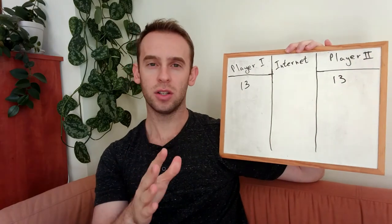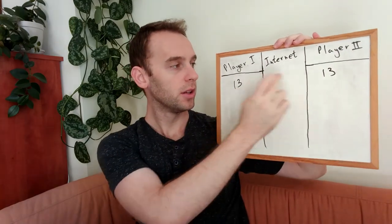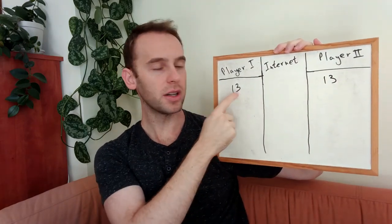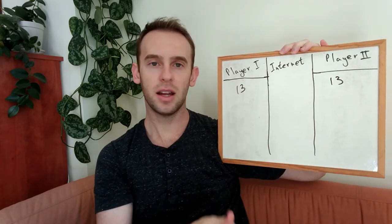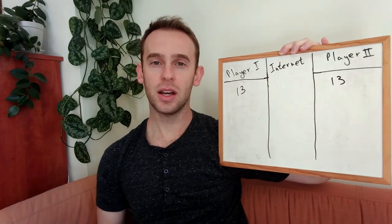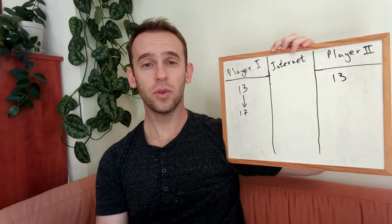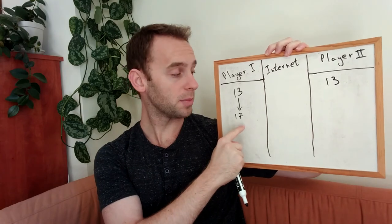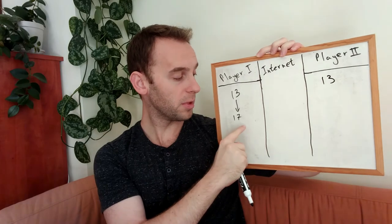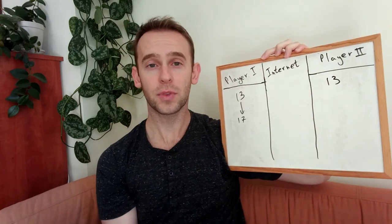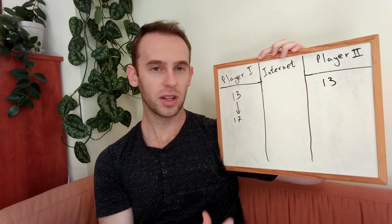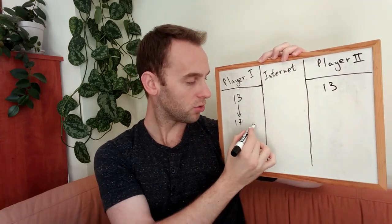Let's assume we have a situation in time where both sides know exactly what the first player's score is. The first player knows his score is 13 and we in some magical way transmitted it to the second player as well. Now the score changes — the first player's score changed from 13 to 17. We want to transmit this 17 to the second player. The first solution that comes to mind is that every time the score changes, we simply transmit it.